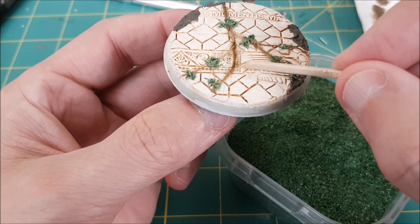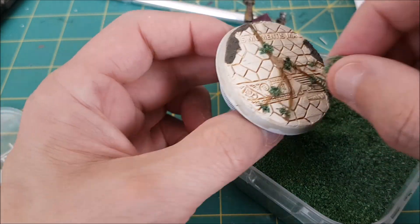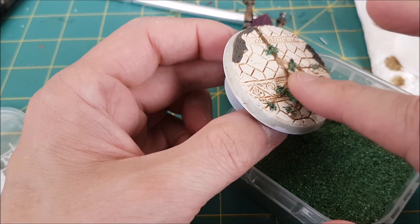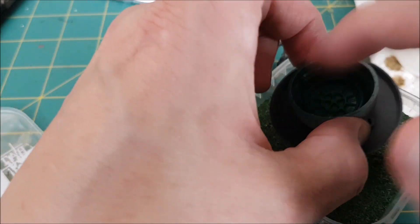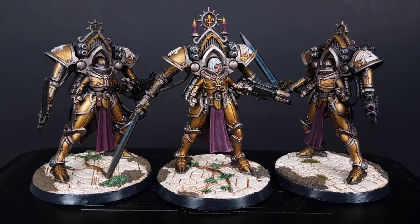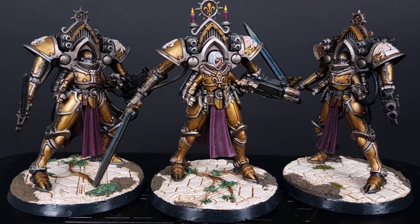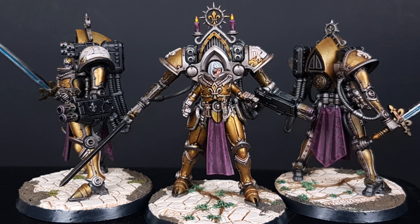And that's the last step for these bases, and I would recommend pinning your models to the base. Superglue should work for models with lots of contact area, but anything with tiny feet, you might want to pin it down. Anyway, I hope you found this video useful, or at least interesting. Thank you to all of our Patrons for your continued support. This is Mike from WatchItPaintIt, and thanks for watching.